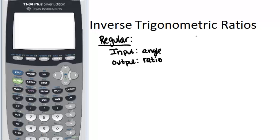Now, an inverse trigonometric ratio works the opposite way. For an inverse trig ratio, the input will be the ratio, and the output will be the angle. So you use the inverse trig functions any time you're trying to figure out an angle in a right triangle.